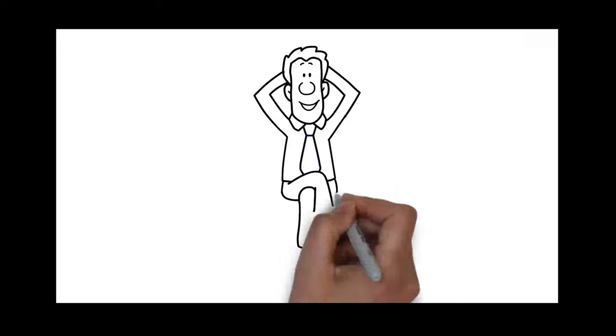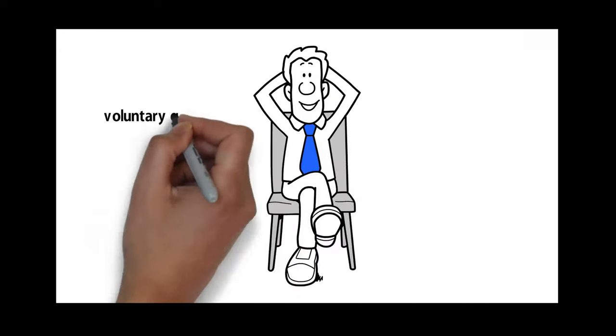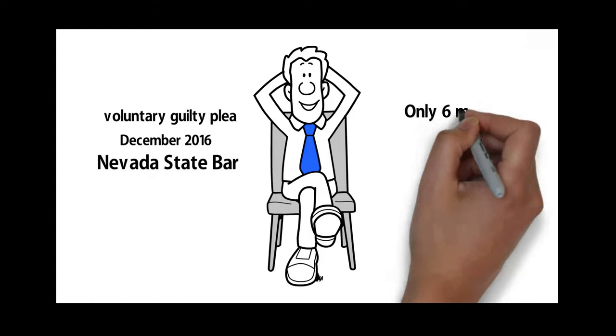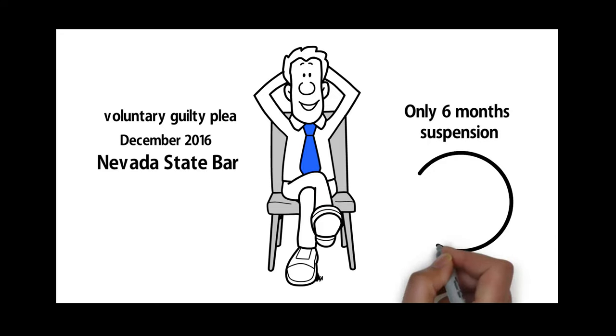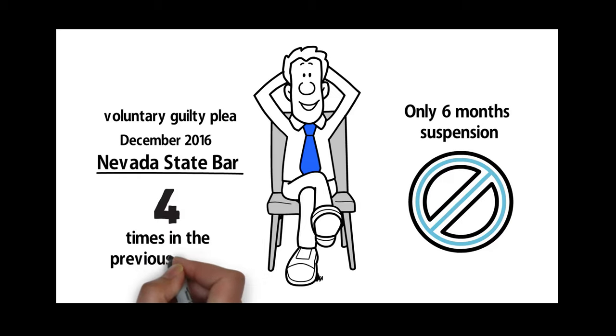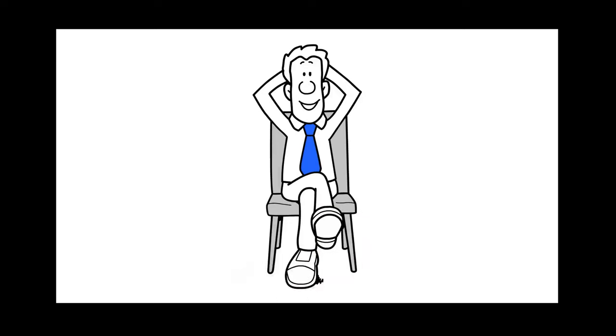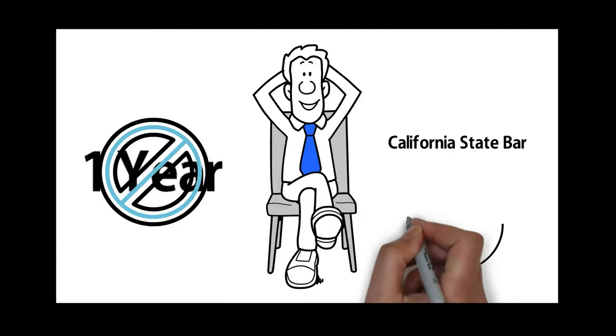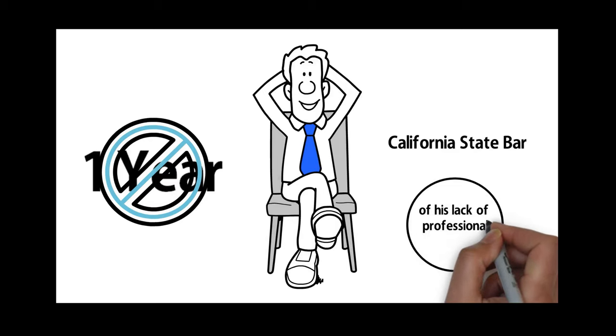This is the same Joseph Hong that made a voluntary guilty plea in December 2016, so the Nevada State Bar would only give him a six-month suspension after he already had been reprimanded by the Nevada State Bar four times in the previous decade. This is the same Joseph Hong that was suspended for one year by the California State Bar for some other expression of his lack of professional ethics.